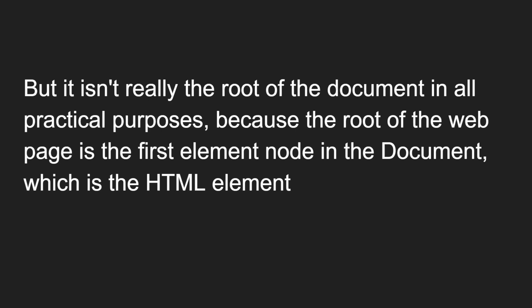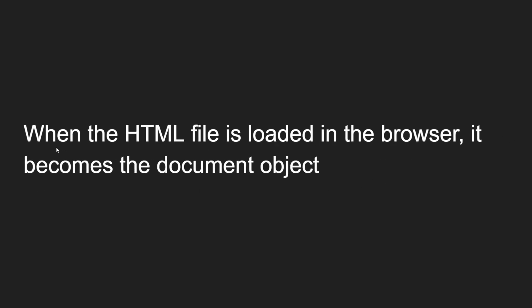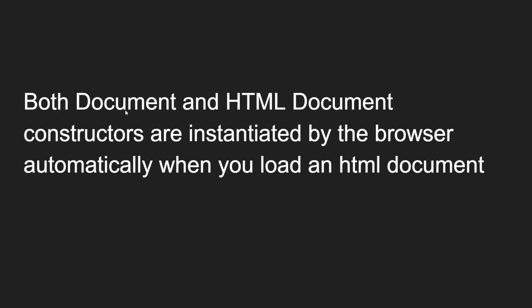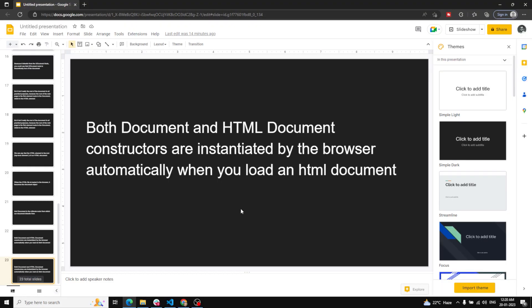Inside the HTML element you will have the head and body. So practically, the first element node in the document is the HTML element itself - that is the root of our HTML document. When the HTML file is loaded in the browser, it becomes the document object, and capital-D Document is the ultimate node from which our document inherits. Both Document and HTMLDocument constructors are instantiated by the browser automatically when you load an HTML document.